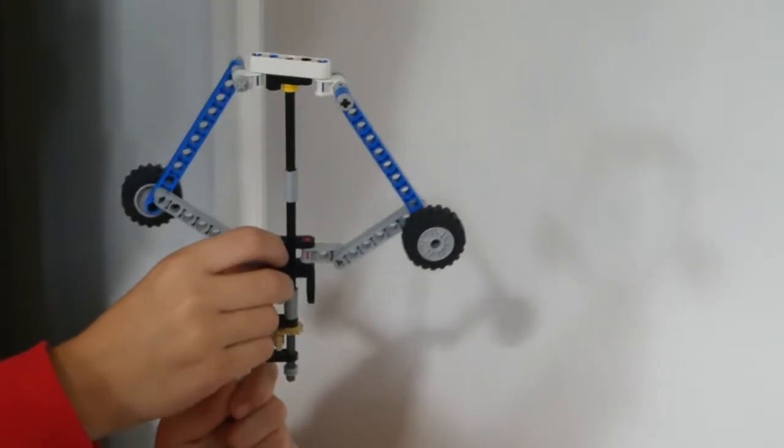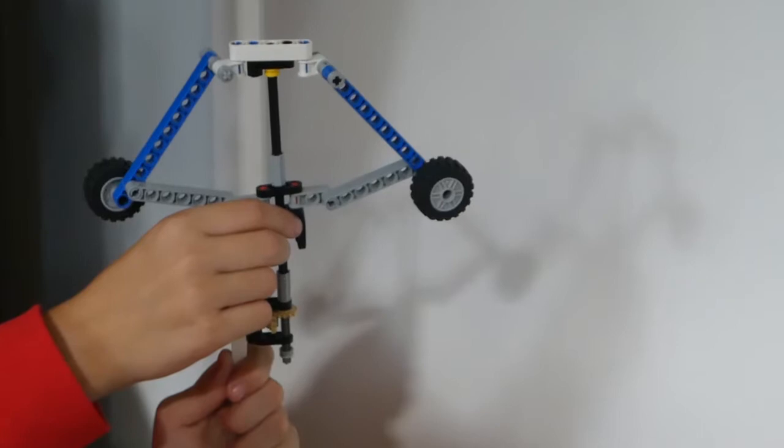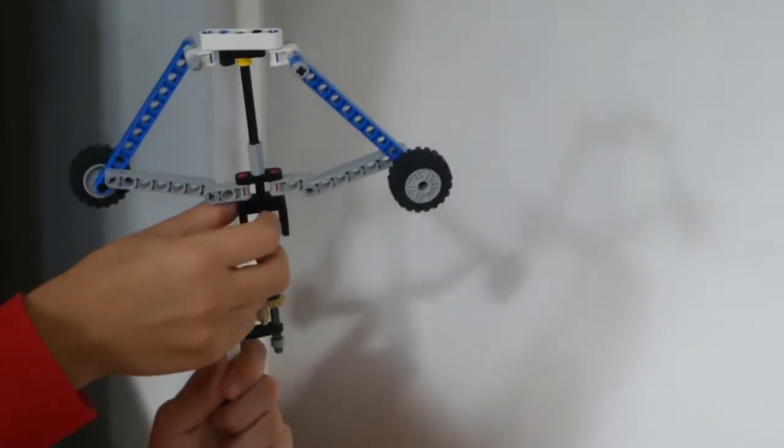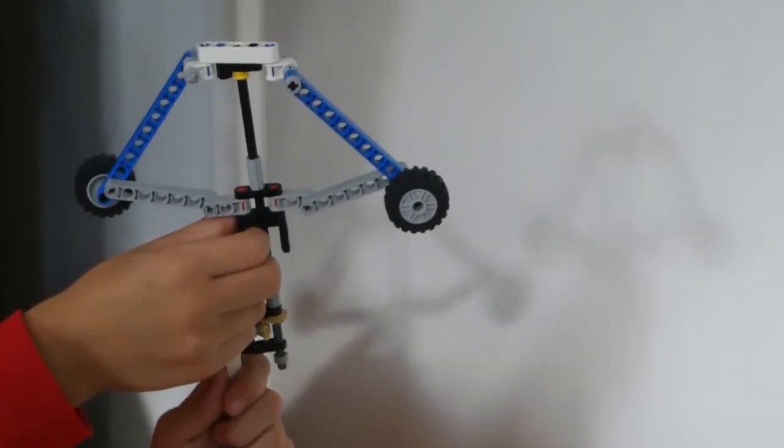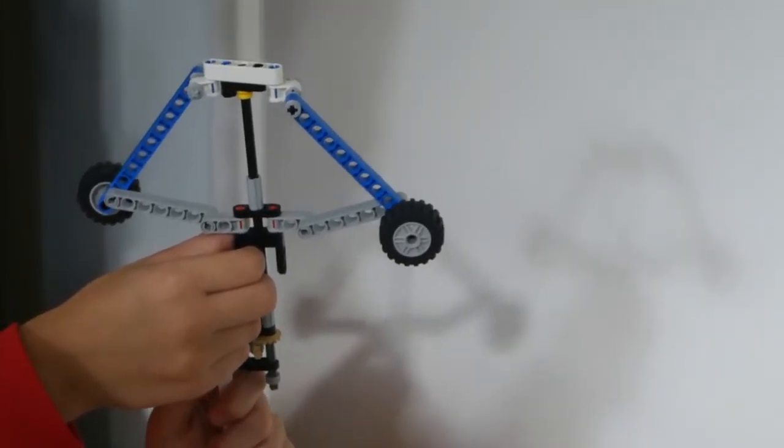So that would be attached to a valve. As the steam engine goes faster, that would rise, close off a valve, and reduce the amount of steam going to the engine. And then it would slow down again and the valve would open. So if you just spin it again.